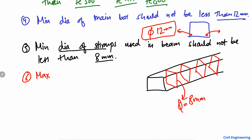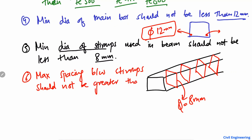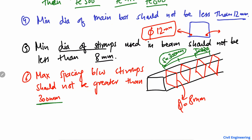The sixth point is that the maximum spacing between the stirrups should not be greater than 300 millimeters. By spacing, I mean the distance between consecutive stirrups — this distance should be less than or equal to 300 millimeters. It should not be greater than 300 millimeters.